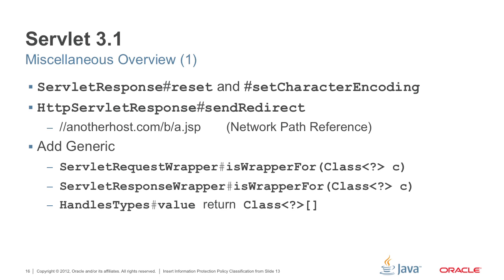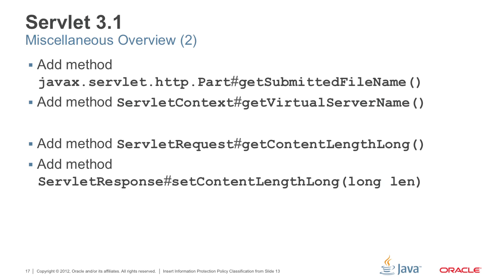The second miscellaneous feature is that sendRedirect now also supports network path references, also called protocol-relative URLs. We also add generics to the ServletRequestWrapper with the isWrapperFor method, and similarly for the response. We also add several other APIs: for example, in Part we have getSubmittedFileName, used in multipart. In ServletContext, we have an API to get the virtual server name, allowing JASPIC modules to get the corresponding virtual server name so you can write code in a portable way. We also added getter and setter for content length long in the request and response objects.